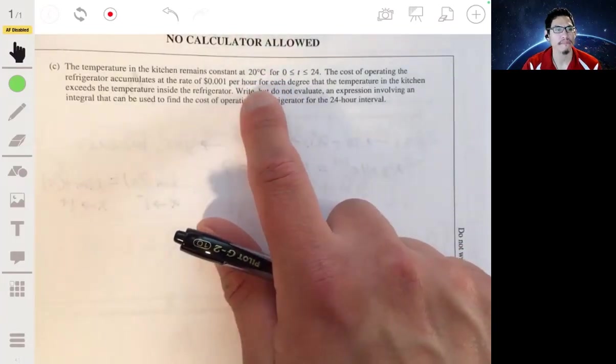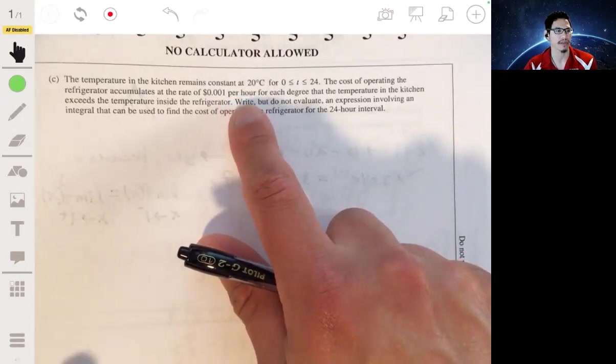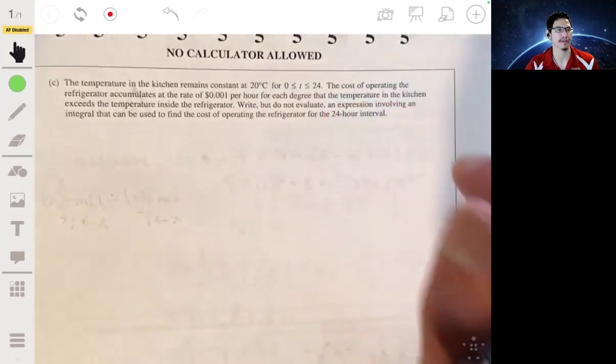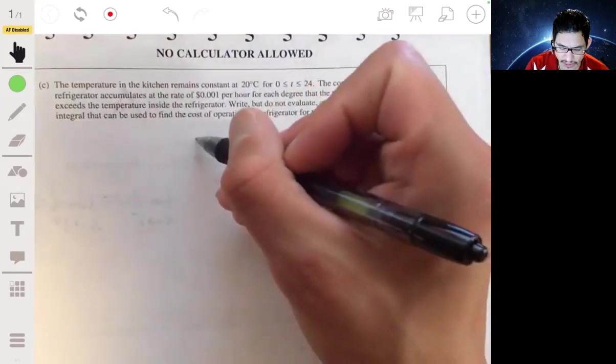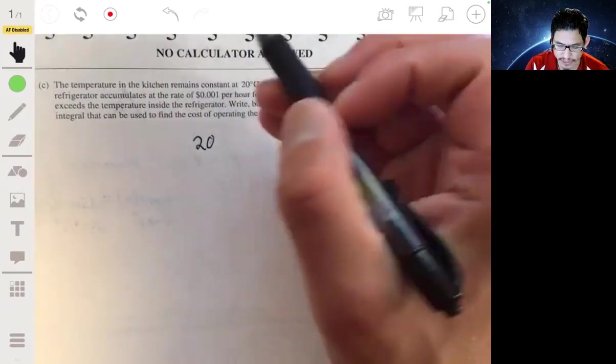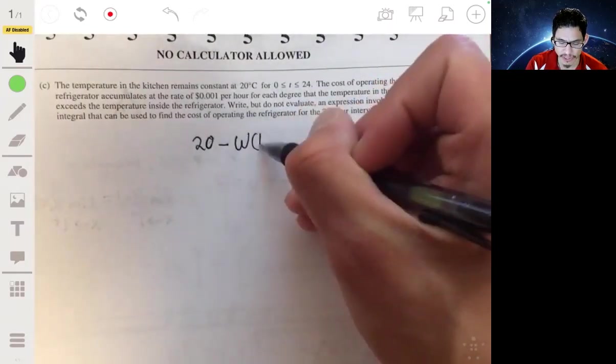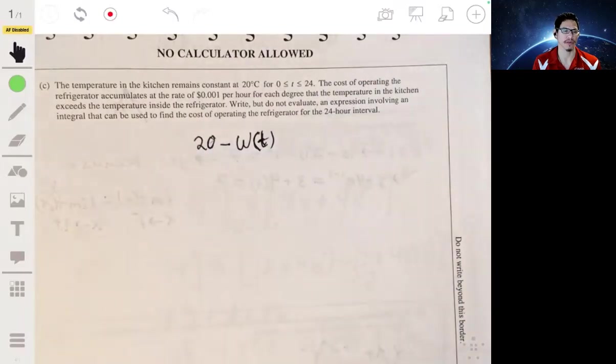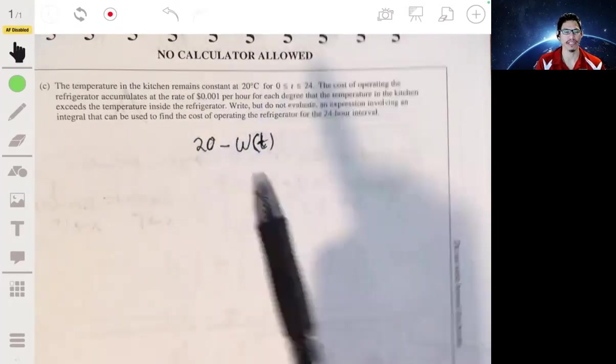Okay. So, since we're looking for how many hours does the temperature in the kitchen exceed the temperature inside the refrigerator, to find that, since 20 is the temperature in the kitchen, we'll just do 20 minus W of T. That would give us values for the values of the temperature when they're more than 20. Because it's just a difference.